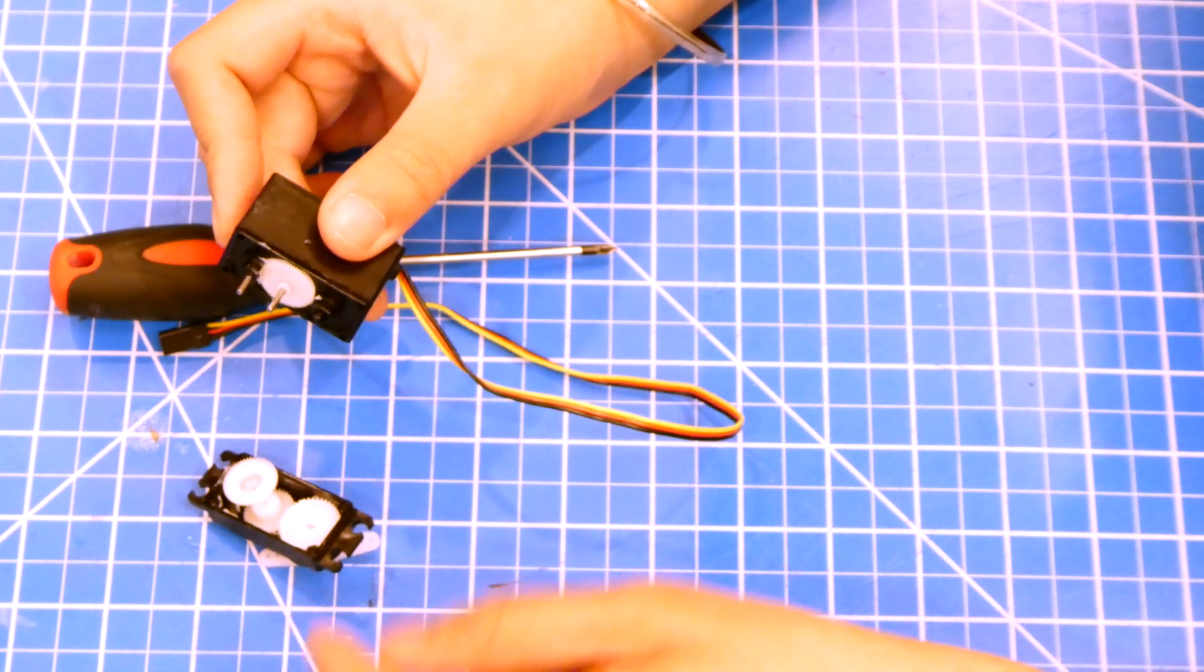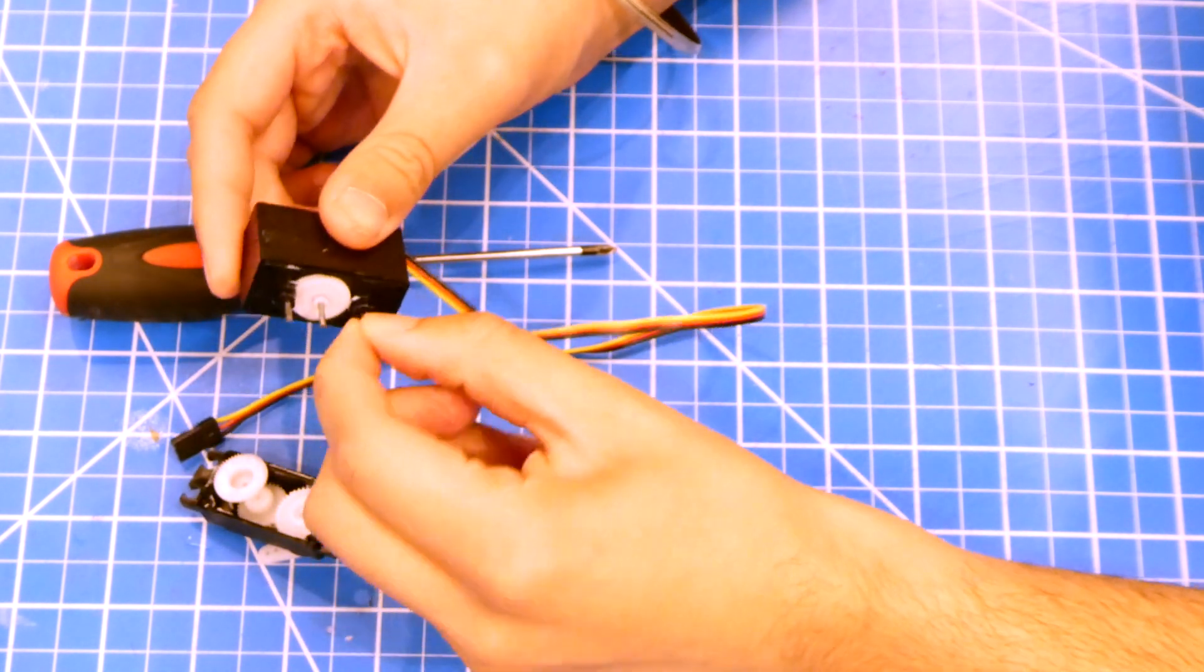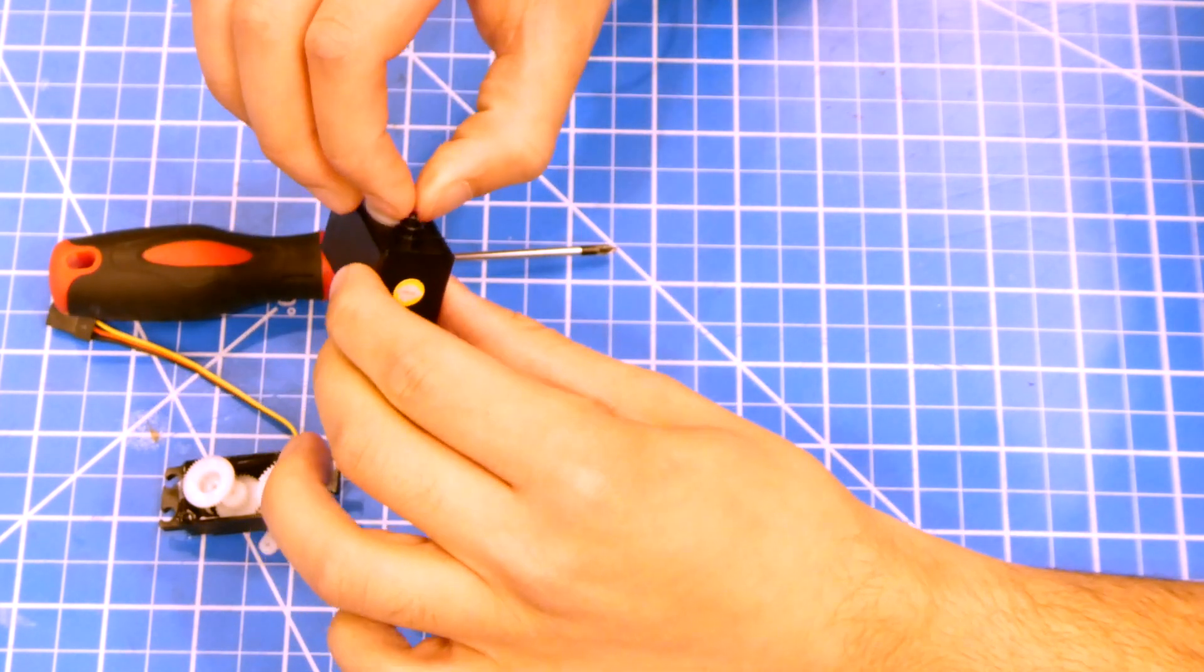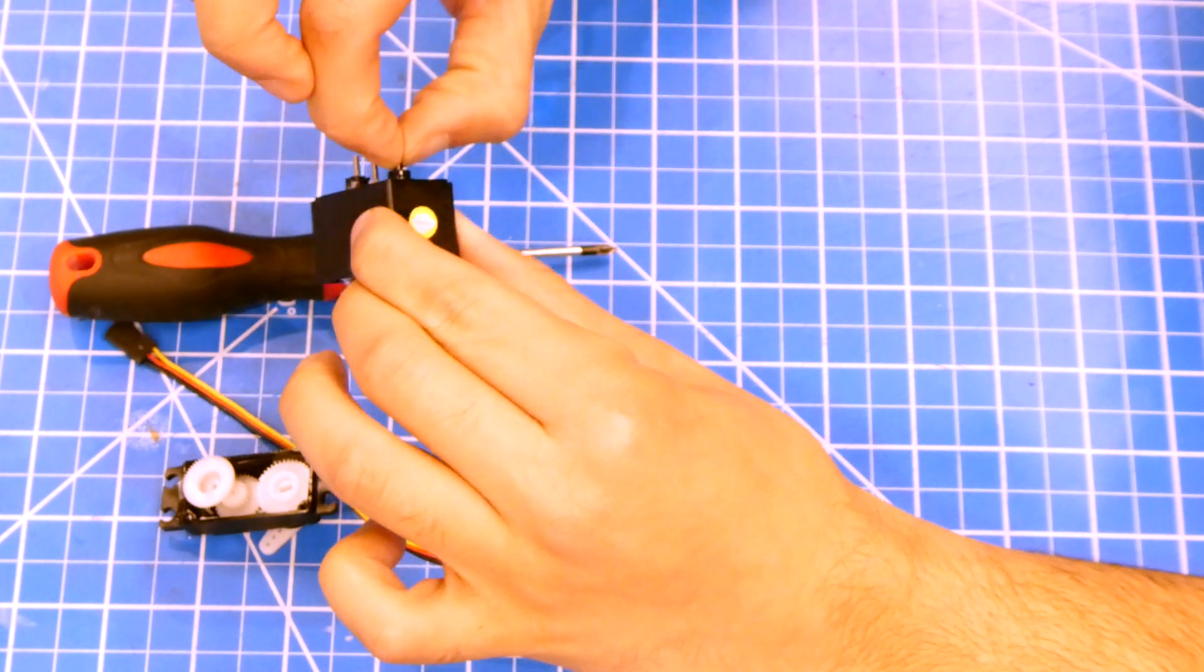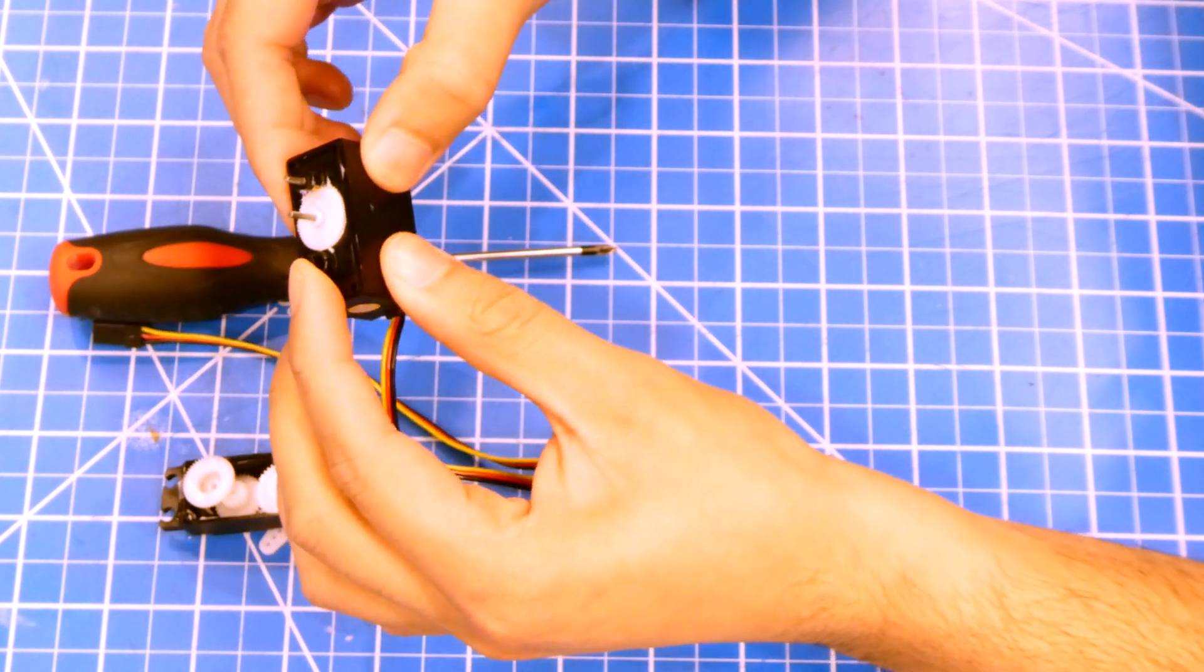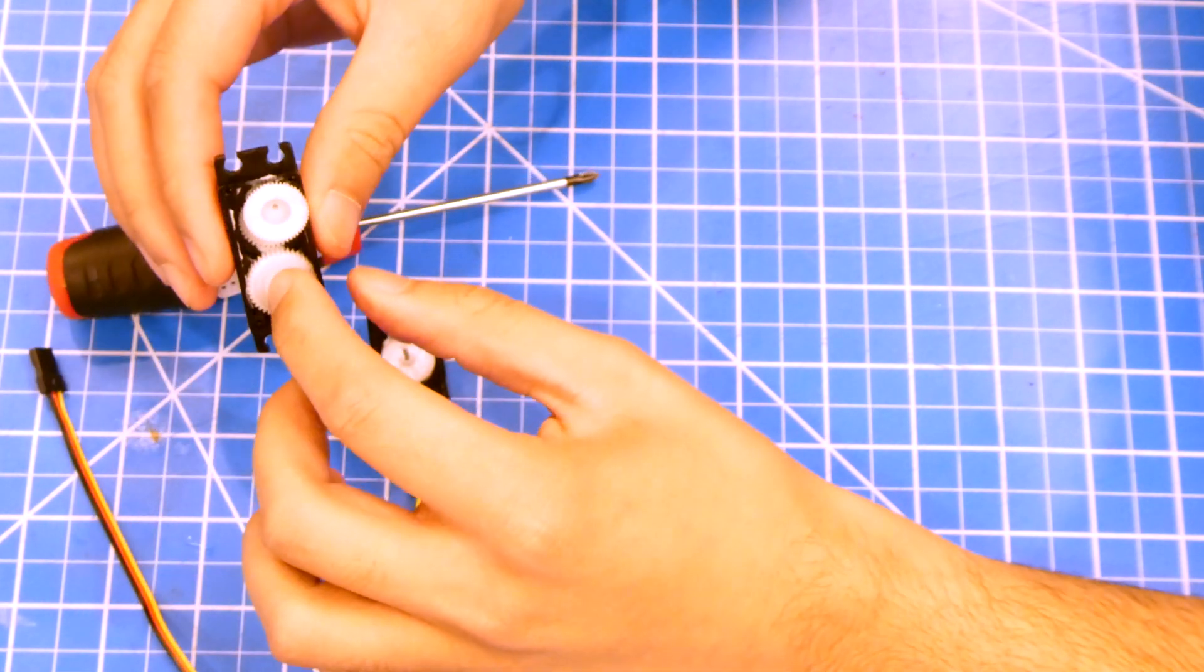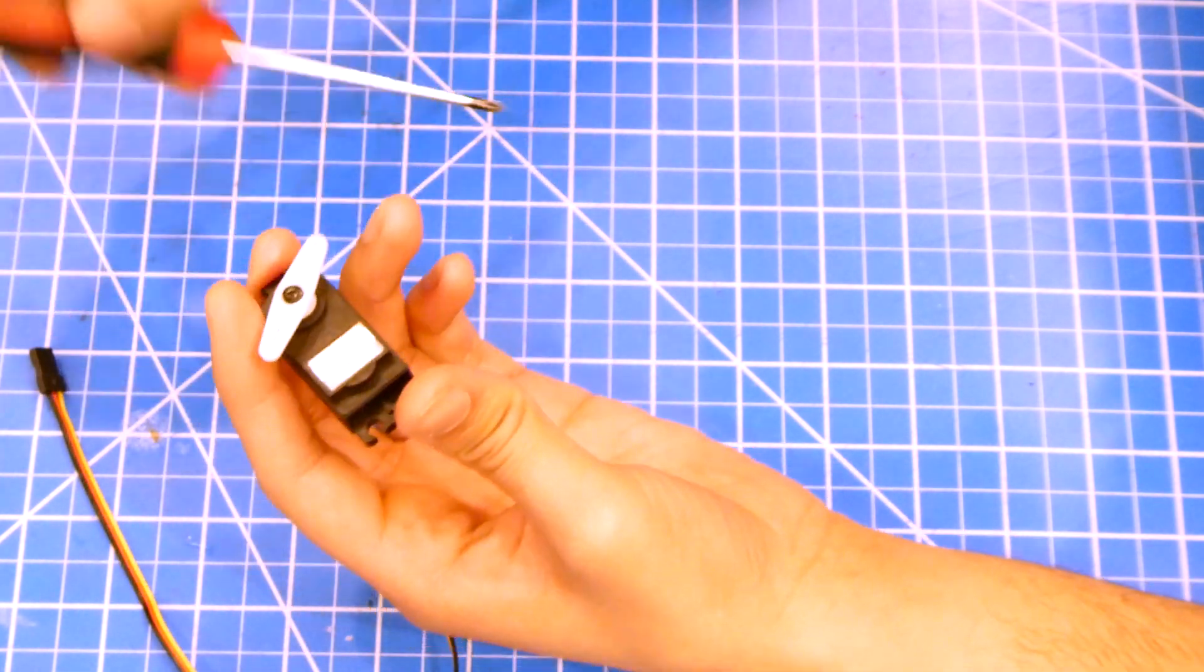So we want to set this to its middle point, which is just in the center. If you wobble it around, you can figure out that the center point is right there. Get the gear that matches with it, which is this one.